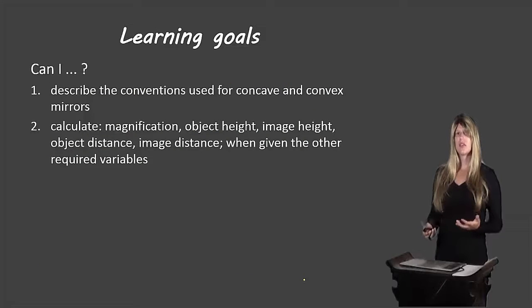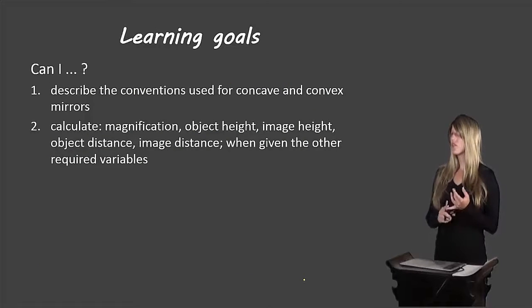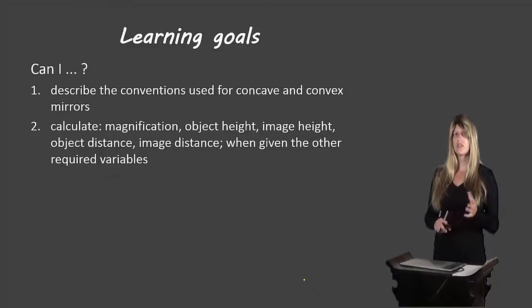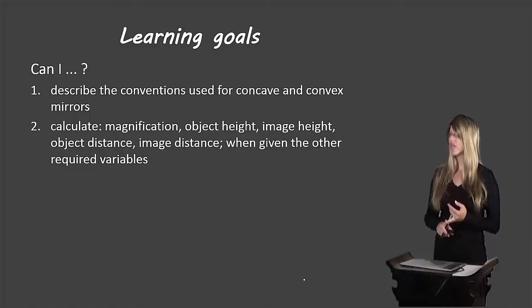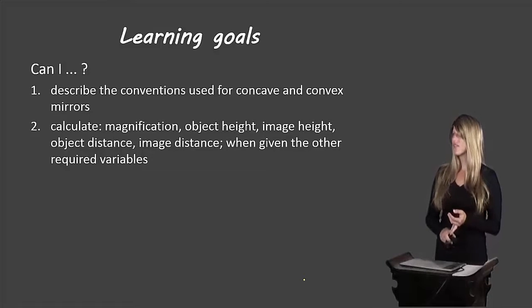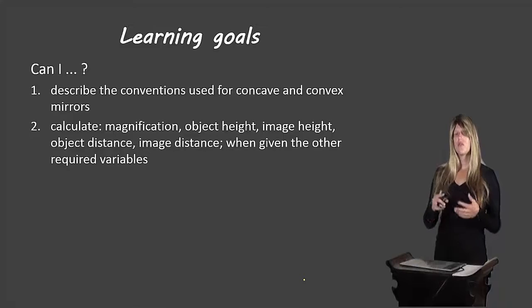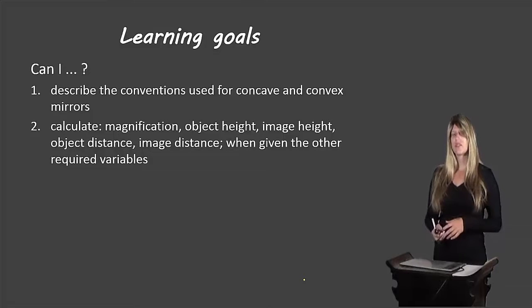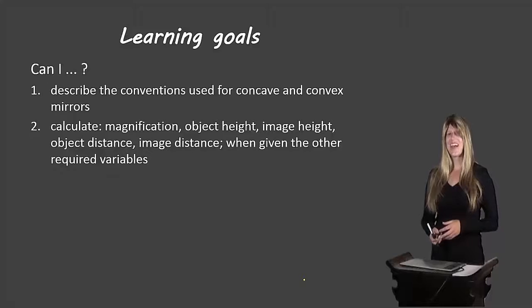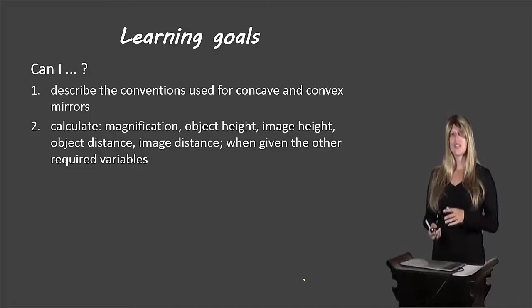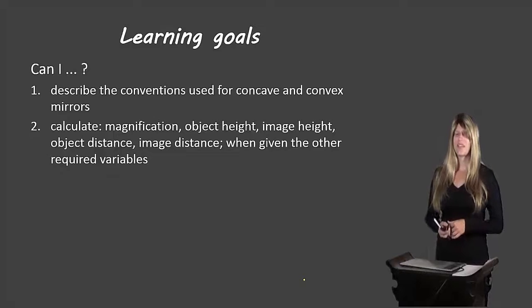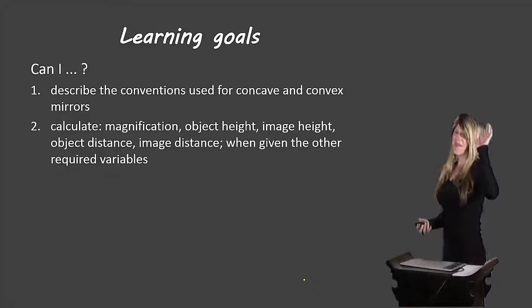Let's take another look at our learning goals. You should be able to describe the conventions used for concave and convex mirrors — those are the positive and negative signs. You should be able to calculate magnification, object height, image height, object distance, and image distance when given the other required variables. If you can do this, fantastic. If not, please re-watch the video, and if you're still having trouble, please come ask me in class. That's all for now — bye-bye!